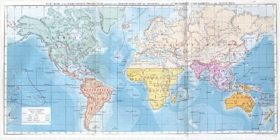Biogeography is an integrative field of inquiry that unites concepts and information from ecology, evolutionary biology, geology, and physical geography. Modern biogeographic research combines information and ideas from many fields, from the physiological and ecological constraints on organismal dispersal to geological and climatological phenomena operating at global spatial scales and evolutionary time frames.